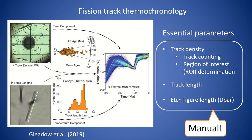Fission track thermochronology is a temperature sensitive radiometric dating technique which uses different parameters in minerals, mostly apatite, obtained from an analytical sequence. Data obtained can be used for inverse modeling to reconstruct the thermal and tectonic history of the Earth's uppermost crust.